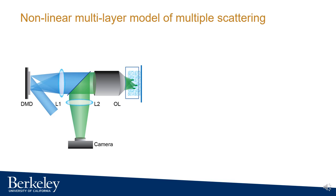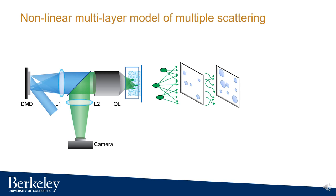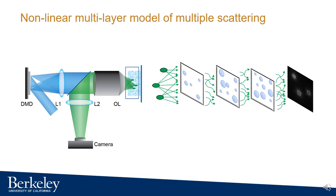We treat the scattering tissue as a multi-layer model of multiple scattering. The fluorescent molecules are modeled as point sources. Fluorescence propagates to the first layer of the scattering tissue, light is scrambled and propagates to the next layer. The distance between layers is small enough to assume light follows Fresnel propagation. The tissue is modeled into many layers and the final image is collected by the camera.